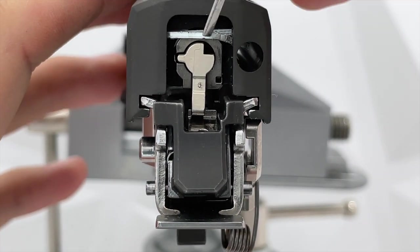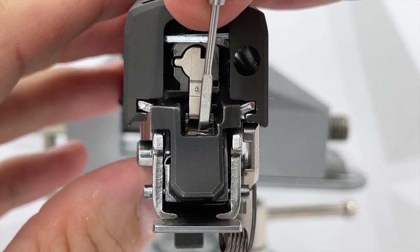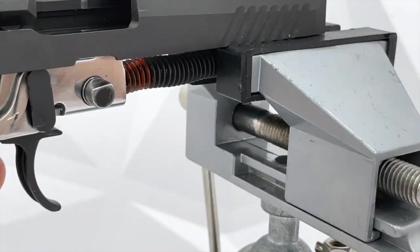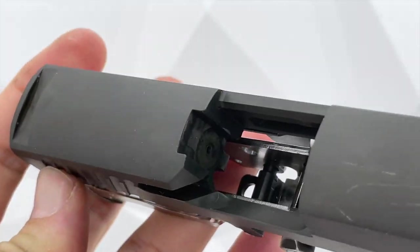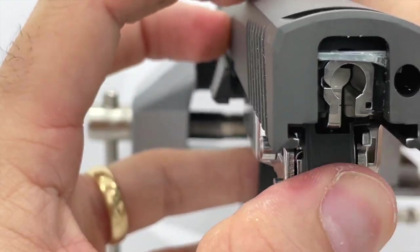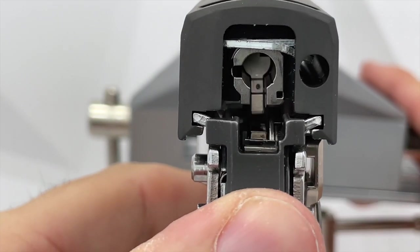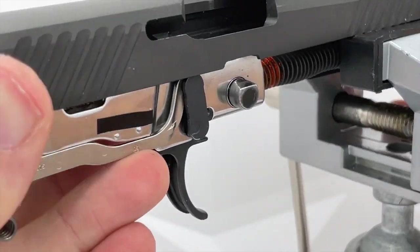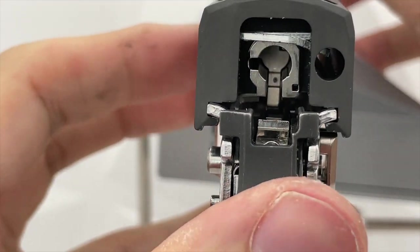So let's test fire by manipulating the sear only and not the trigger. Now we can see in the front, no striker. Let's do it again with the trigger pull this time.